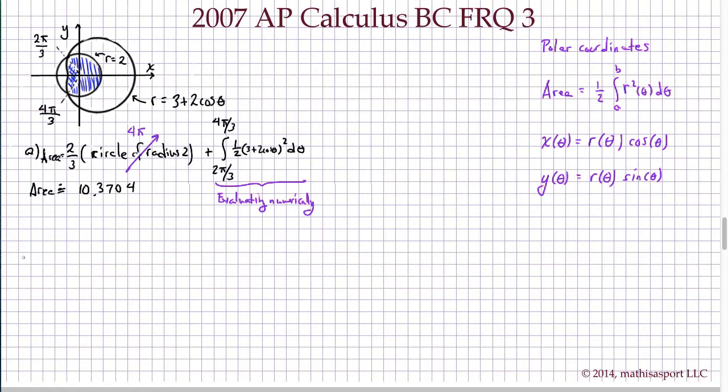All together we get 10.3704. All right, now part b. What they tell us is a particle is moving along this path, so now we're parameterizing it as some function of t. But what we say is that dr/dt equals dr/dθ.